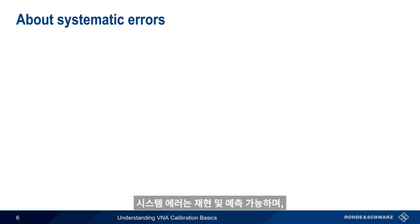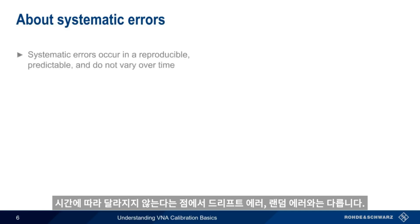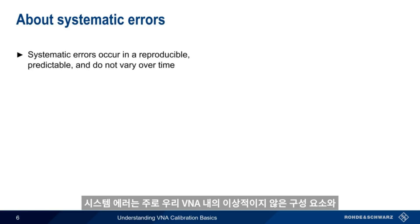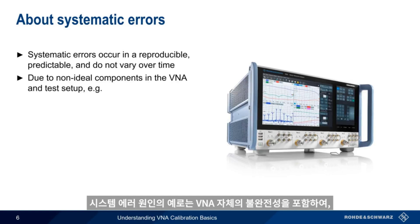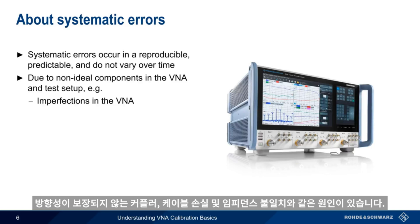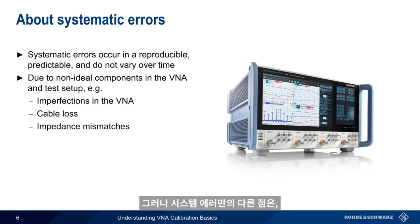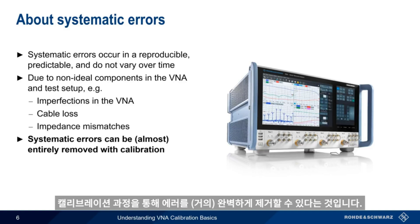Systematic errors differ from both drift and random errors in that they're reproducible, predictable, and time-invariant. This is because systematic errors are primarily caused by non-ideal components within our VNA and within the test setup itself. An example of a systematic error includes imperfections in the VNA, such as directional couplers that aren't perfectly directional. Other examples include cable loss and impedance mismatches. What's different about systematic errors is that systematic errors can be almost entirely removed through calibration.